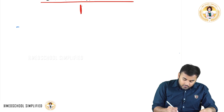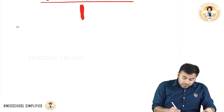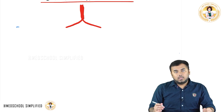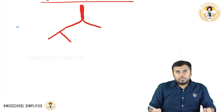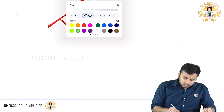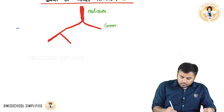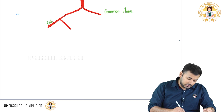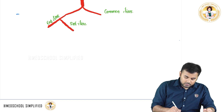First of all, we have this vessel here called the abdominal aorta. The abdominal aorta divides into two branches called common iliac arteries. Common iliac arteries in turn divide into two parts: external iliac and internal iliac. So abdominal aorta divides into two common iliacs, and then into external iliac and internal iliac.